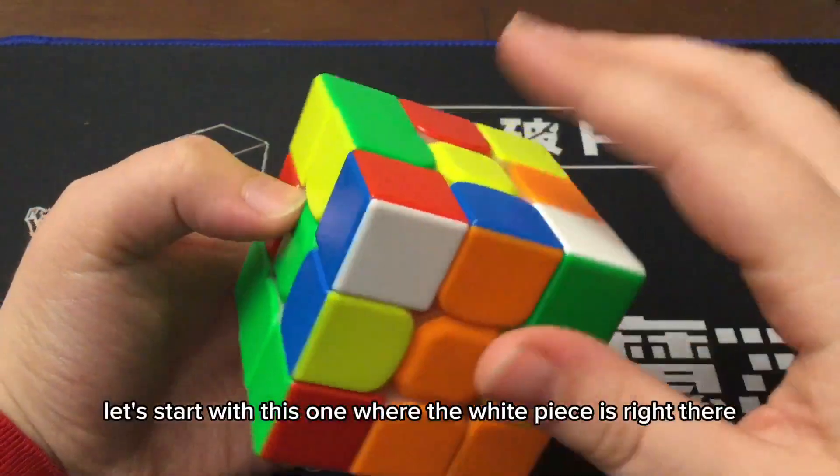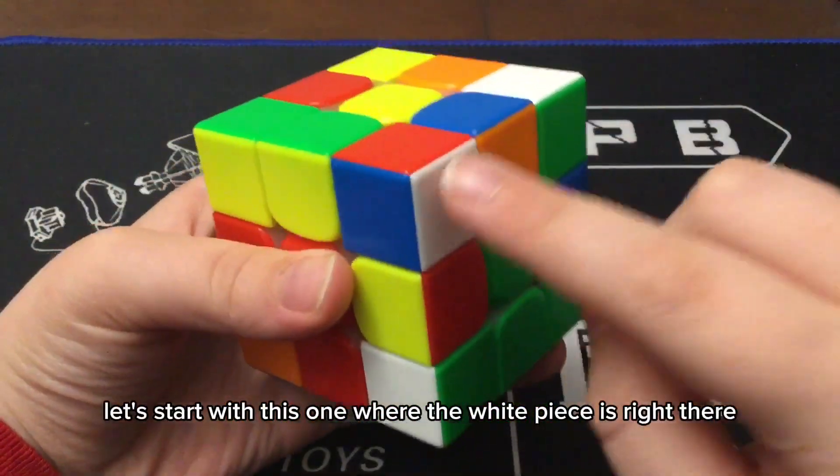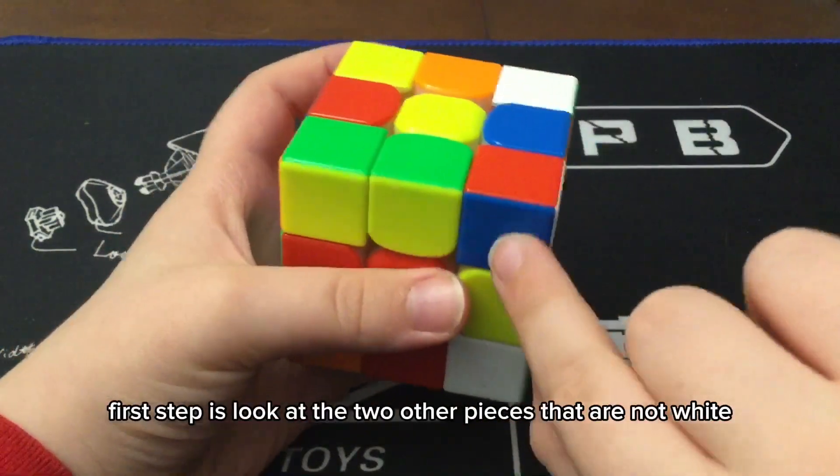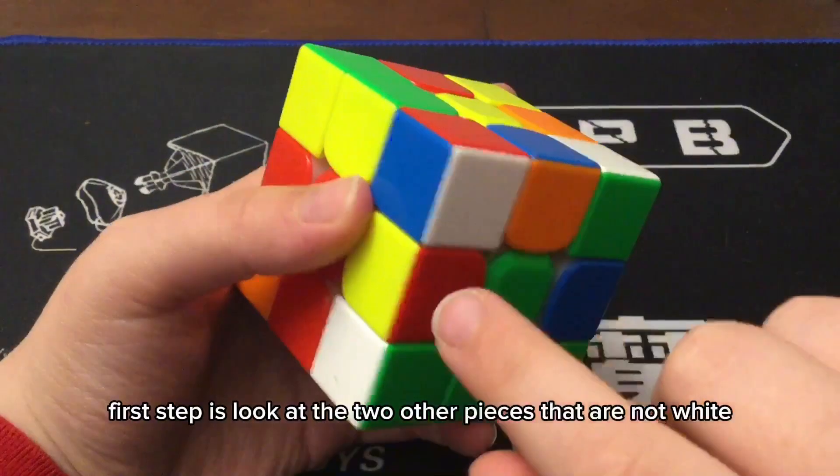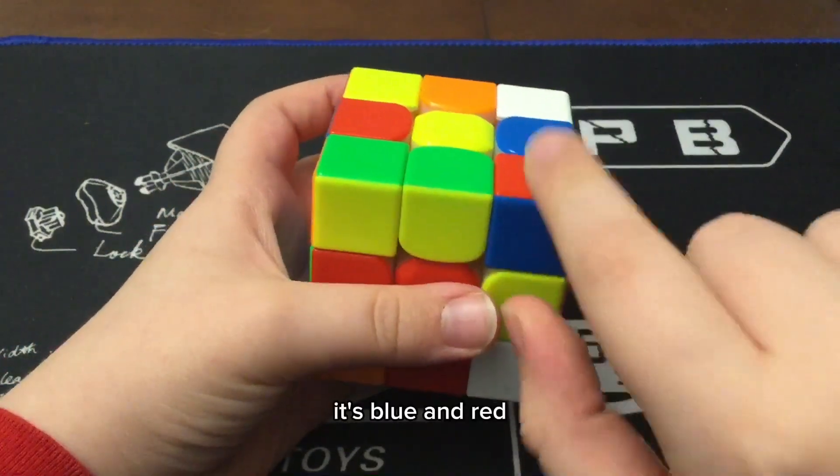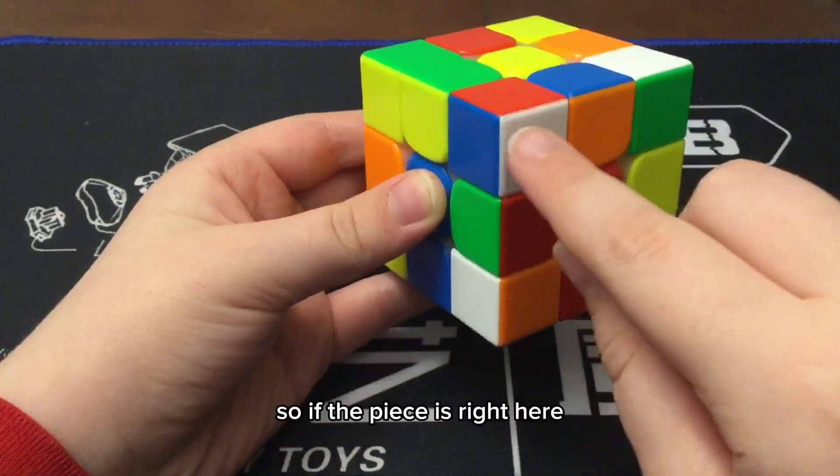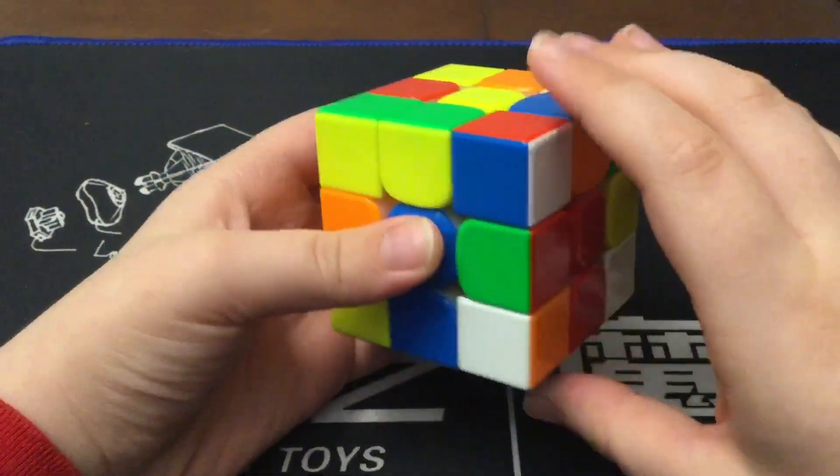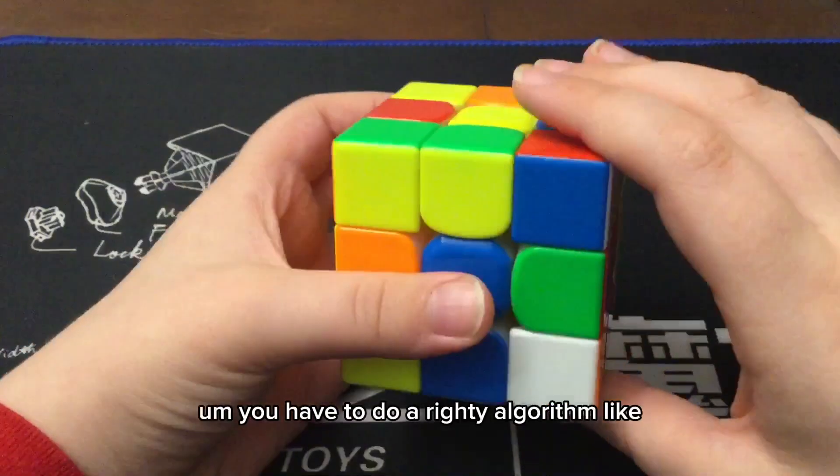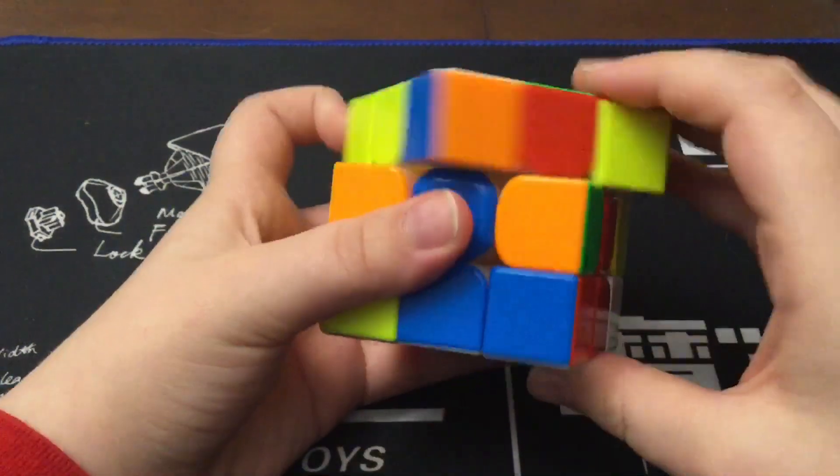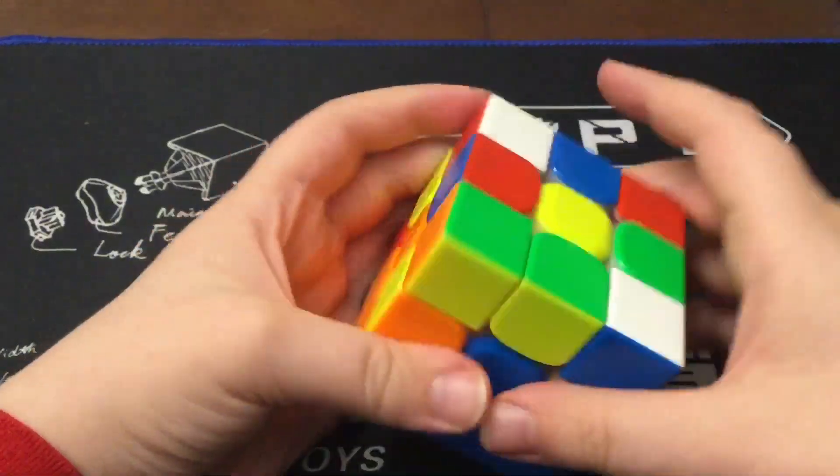Let's start with this one, where the white piece is right there. First step is look at the two other pieces that are not white. It's blue and red, and that means the piece is going to go in between blue and red. So, if the piece is right here, you have to do a righty algorithm.